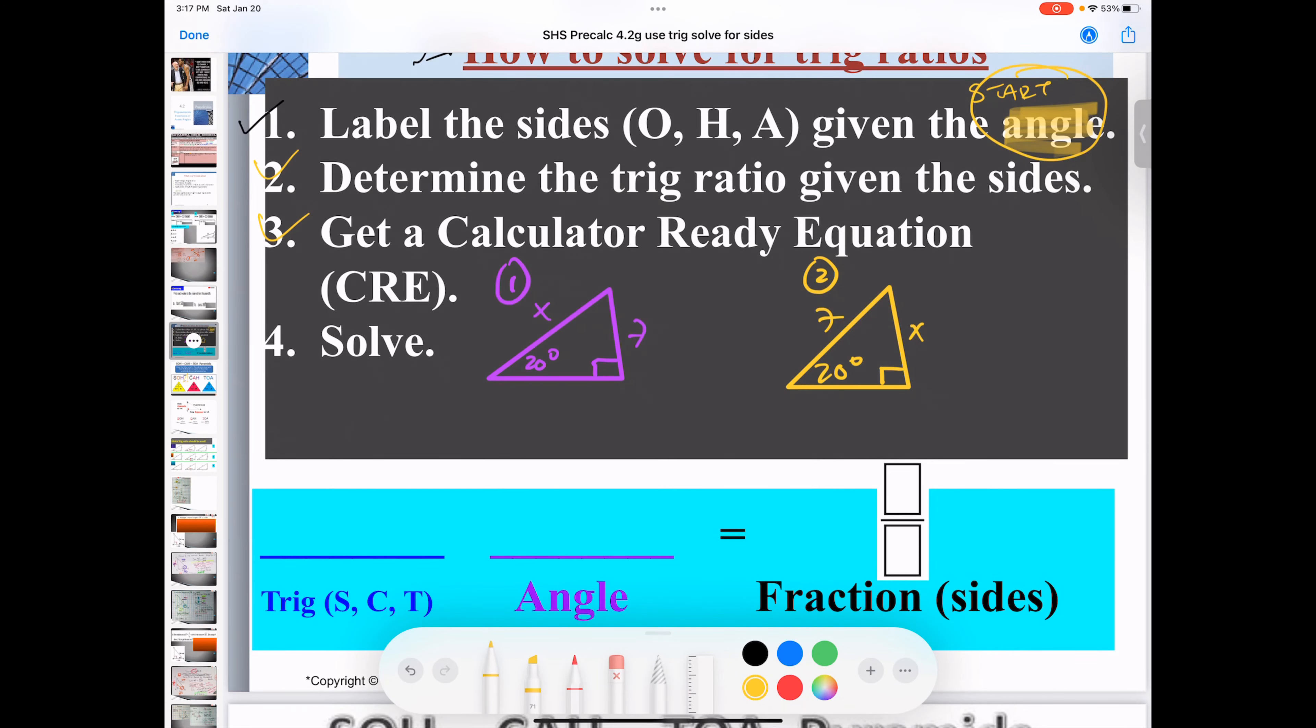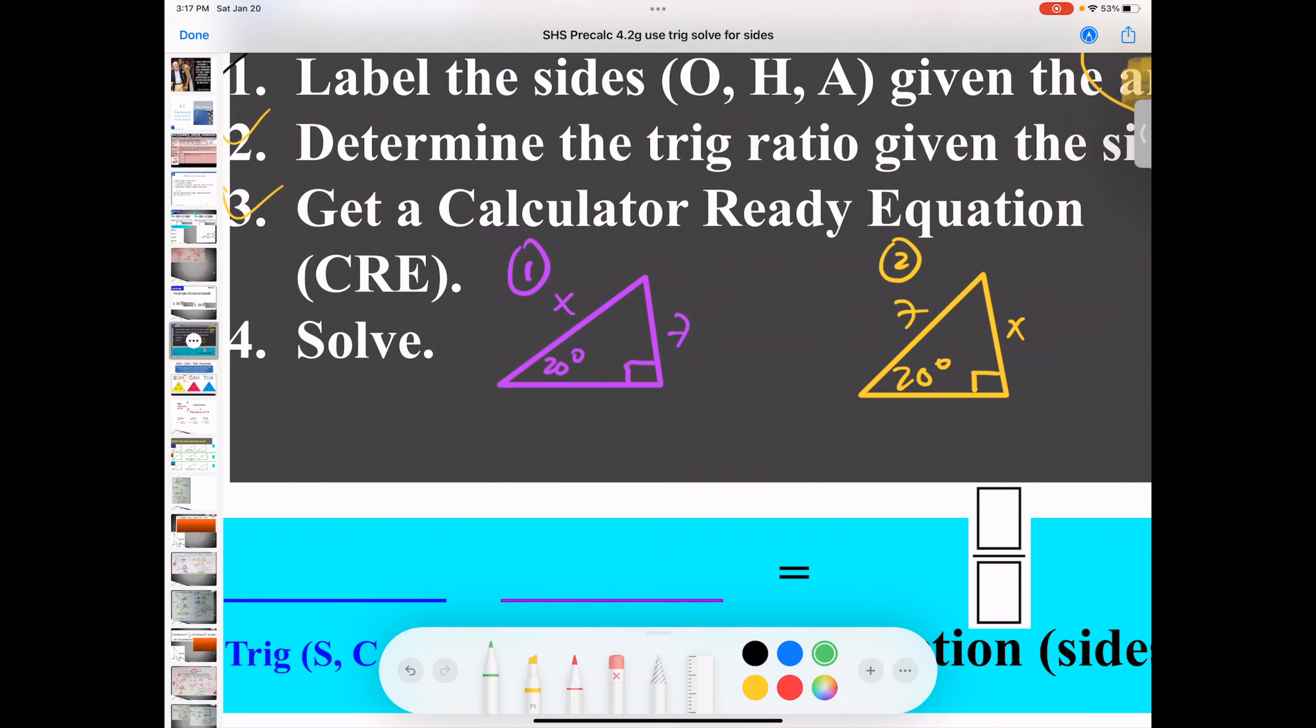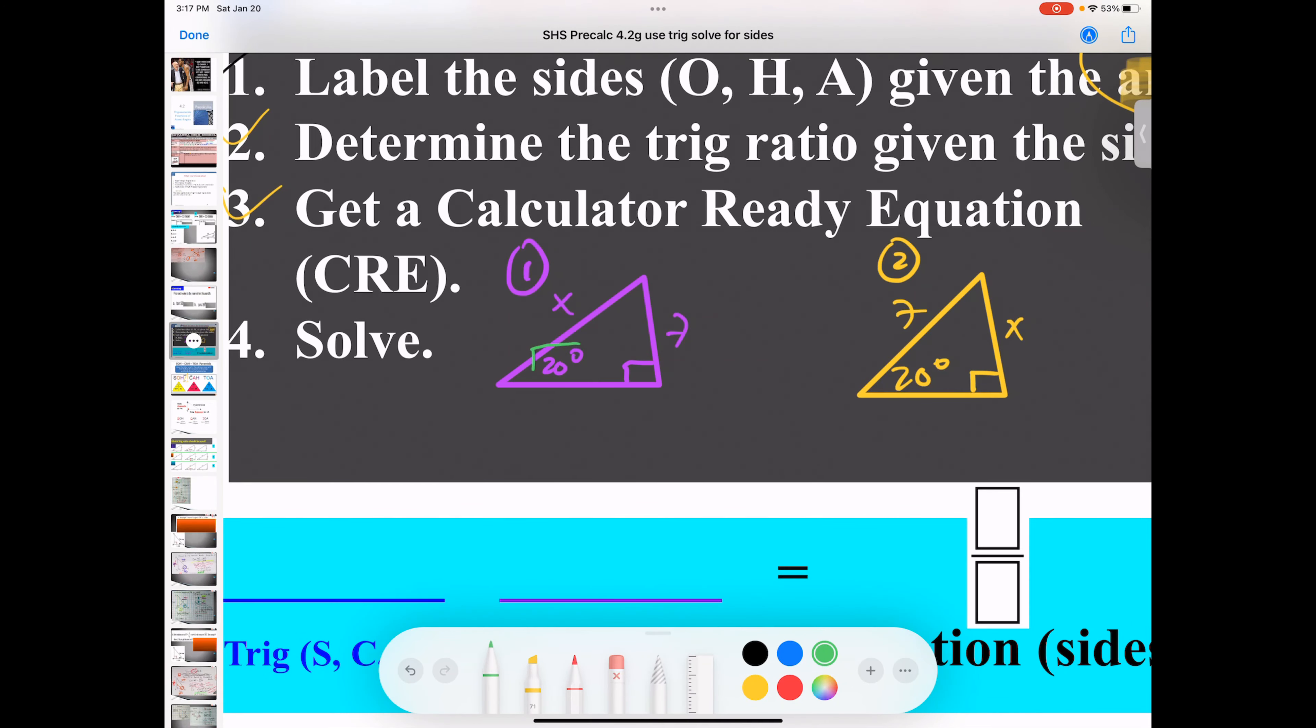Okay. So here's an example. Example number one, we have solve for X. We're going to start with the angle here. You're going to go across. This one is called the opposite side. The one across the right angle is the hypotenuse. And then the third side or next to that angle, this is called the adjacent side.